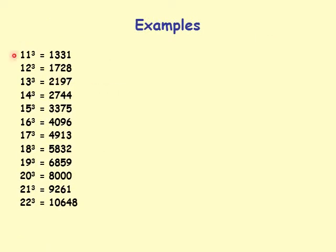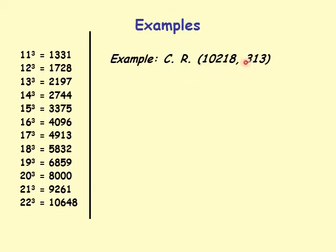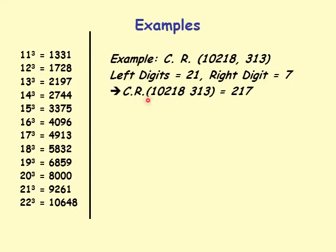Here's an example. Here's my extended table here. First 10 I did not list. I just listed the next 12 cubes of next 12 numbers. Cube root of 10218313, that's about eight digits. Leftmost digit is 10218 which is between these two cubes. That means 21 is my left digits. Right digit is 3, from 3 it is 7. So cube root of 10218313 is 217.